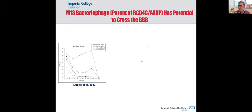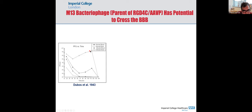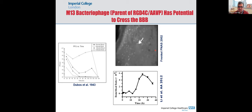The ability of phage to cross the blood-brain barrier was described as early as 1943, when Dobos treated bacterial meningitis using phage injected intraperitoneally in mice and found high levels of phage in the brain. Later groups showed that M13 phage — the one we use to make our vectors — when injected IP or intravenously, appears in the brain with a brain-to-blood ratio greater than one, meaning more phage in the brain than in the blood. That's why we decided to use it to treat brain tumors.